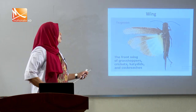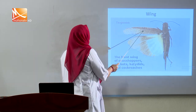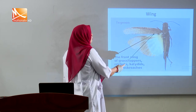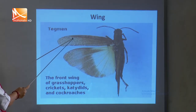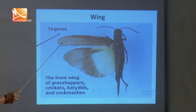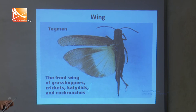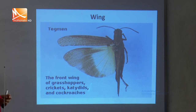Grasshopper has two pairs of wings. The fore wings are elongated, hard, and non-membranous, and are not used in flying. They are known as elytra (or tegmina) because they cover the hind wings when the Grasshopper is at rest. The hind wings are broader, transparent, and membranous, and are used for flying.